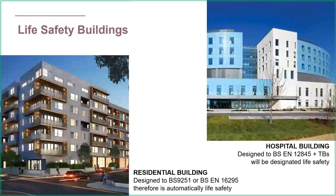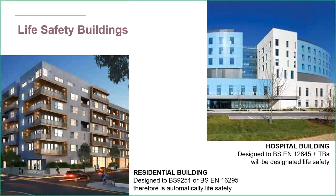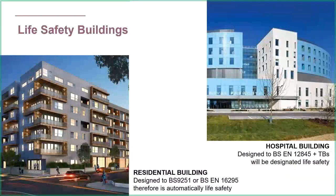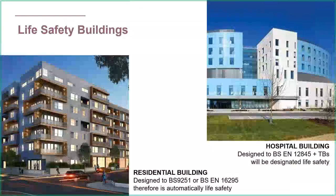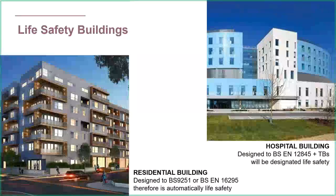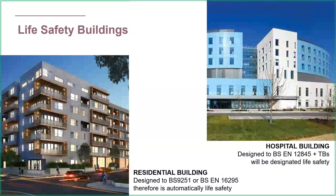In terms of what actually happens it's very similar - sprinkler heads will be heat activated, water will be discharged, alarms will sound. But for life safety, what we're actually trying to achieve is safe evacuation from the building - keeping exits clear, keeping smoke to a minimum, suppressing the fire to give people extra time to evacuate. Also, who's in charge differs: for property protection it's the insurance company, but for life safety it's the building owner and other stakeholders - for example, NHS trusts for a hospital.